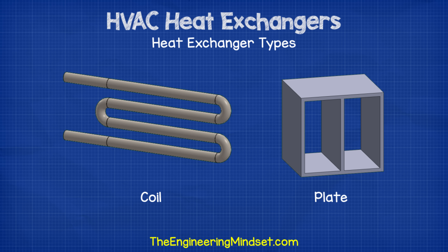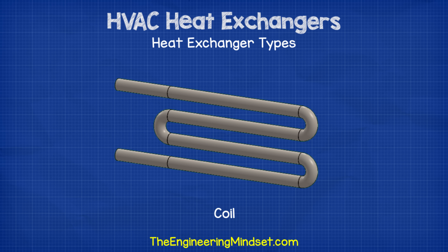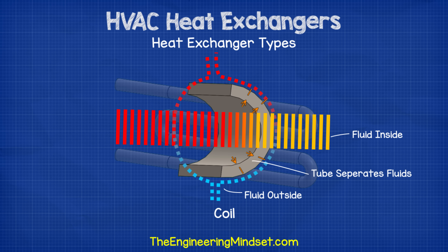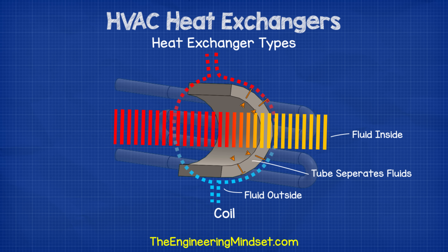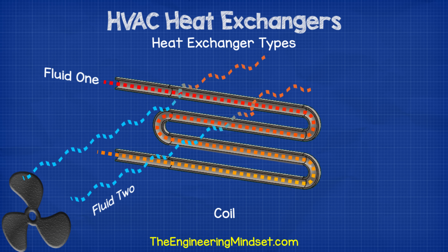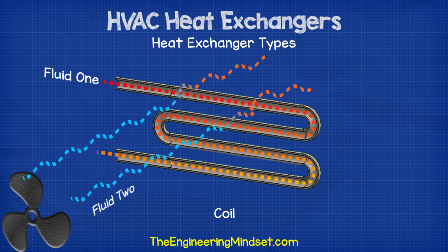Most heat exchangers follow one of two designs: either coil or plate design. Coil heat exchangers in their simplest form use one or more tubes which run back and forth a number of times. The tube separates the two fluids — one fluid flows on the inside of the tube and another flows on the outside. Heat is transferred from the hot inner fluid to the tube wall via convection, then conducts through the pipe wall, and the outer fluid which is cooler carries it away through convection.